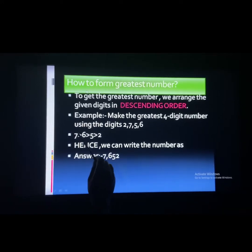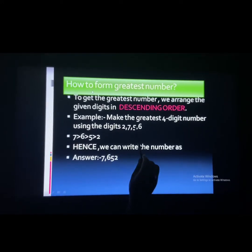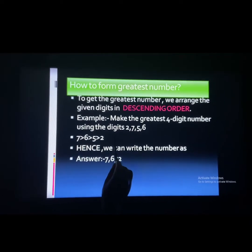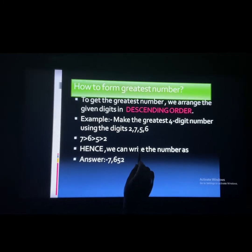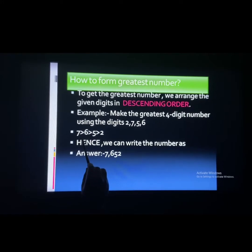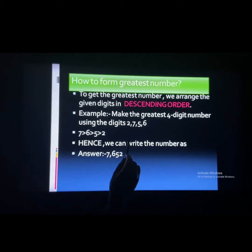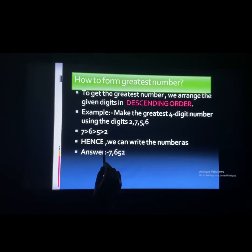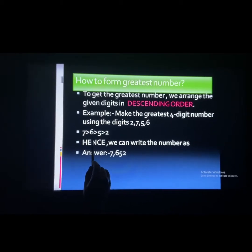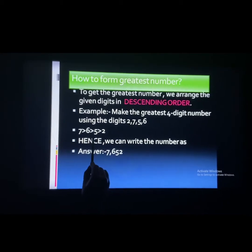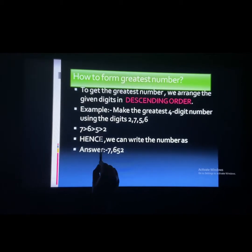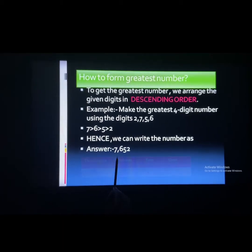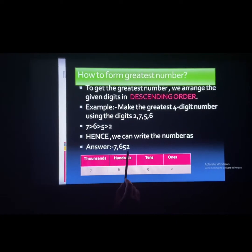Let us have a look at one example. Suppose we have to make the greatest four-digit number using the digits 2, 7, 5, 6. We can see that 7 is the greatest among all. Using the greater-than sign: 7 is greater than 6, 6 is greater than 5, and 5 is greater than 2. Hence, we can write the number as 7652.